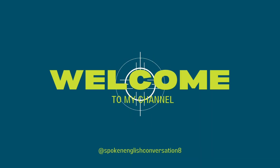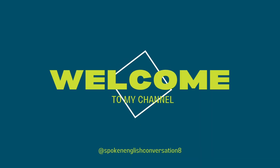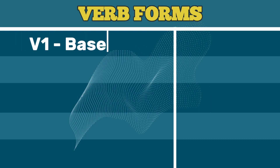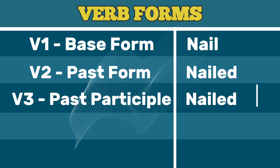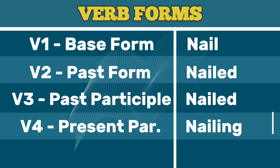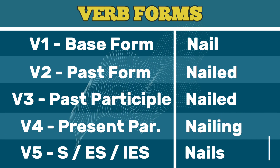Spoken English Conversations — please subscribe. V1 Base Form: Nail. V2 Past Form: Nailed. V3 Past Participle: Nailed. V4 Present Participle: Nailing. V5 Third Person Singular (S/ES/IES): Nails.